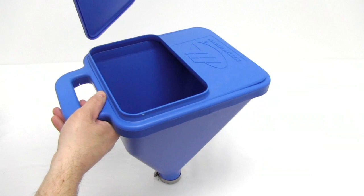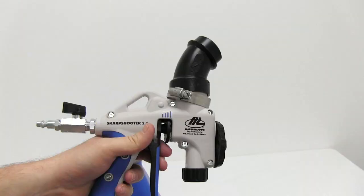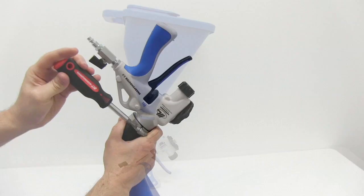The 2.0's Hopper features a removable lid for short period storage. This also keeps debris from falling into the hopper and helps to prevent unwanted spills.